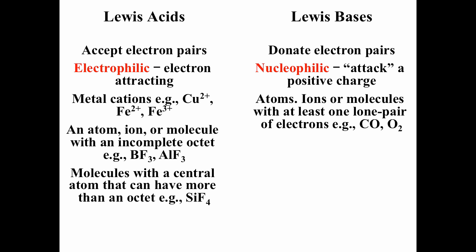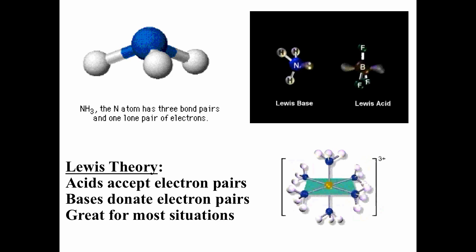Lewis acids accept electron pairs. We call them electrophilic — they like and attract electrons. Metal cations make good Lewis acids. An atom, ion, or molecule with an incomplete octet, like BF3 or AlF3, makes a good Lewis acid. Molecules with a central atom that can have more than an octet, like silicon tetrafluoride, also make good Lewis acids. Lewis bases donate electron pairs; they're called nucleophilic and attack positive charge. Atoms, ions, or molecules with at least one lone pair of electrons make decent Lewis bases. Think of ammonia as our typical weak base — it has that lone pair, so it can donate it, making it a good Lewis base and also a decent Brønsted base.